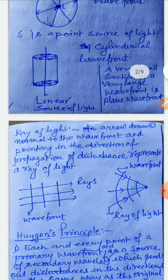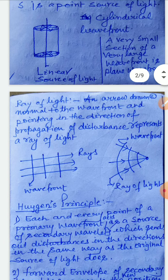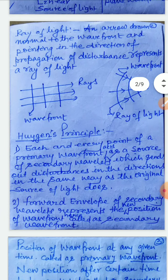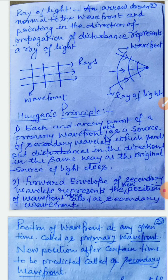An arrow drawn normal to the wavefront and pointing in the direction of propagation of the disturbance represents a ray of light, as you can see in the diagram. Next is Huygens' principle.